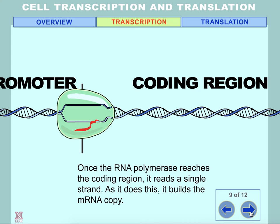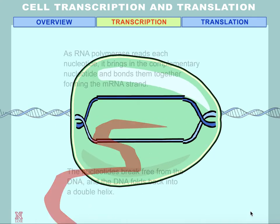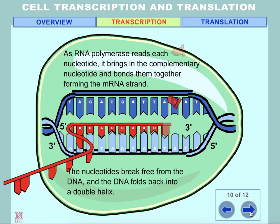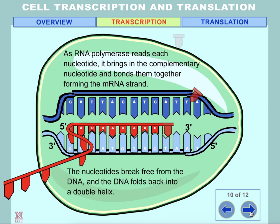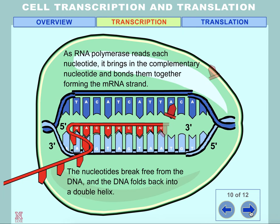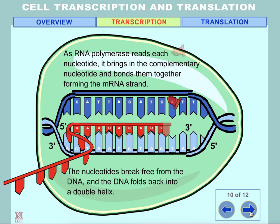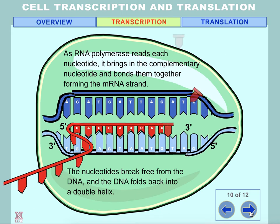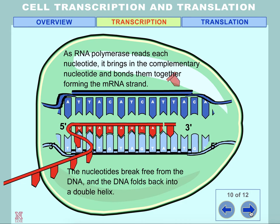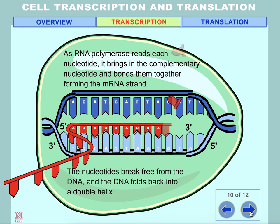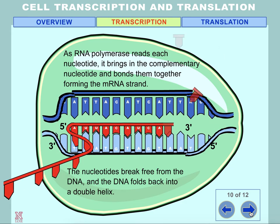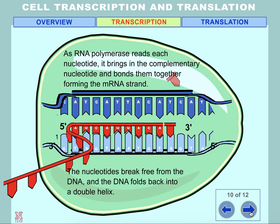Once the RNA polymerase reaches the coding region, it reads a single strand. As it does this, it builds the mRNA copy. As RNA polymerase reads each nucleotide, it brings in the complementary nucleotide and bonds them together, forming the mRNA strand. The nucleotides break free from the DNA, and the DNA folds back into a double helix.